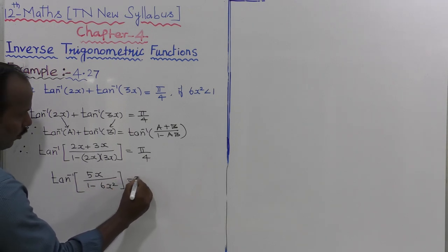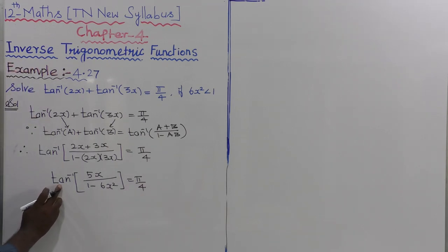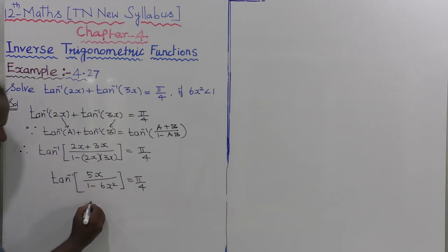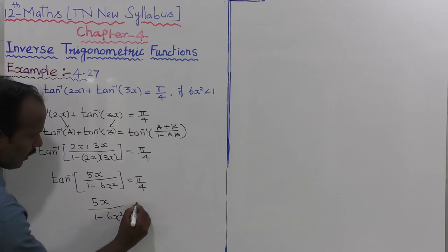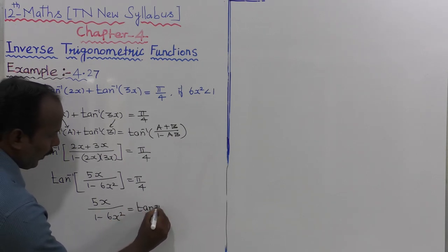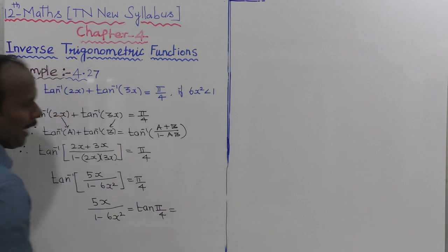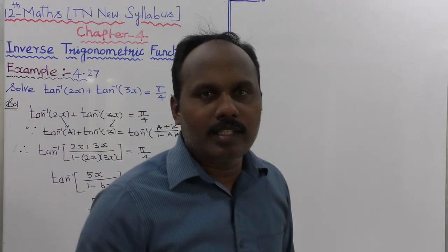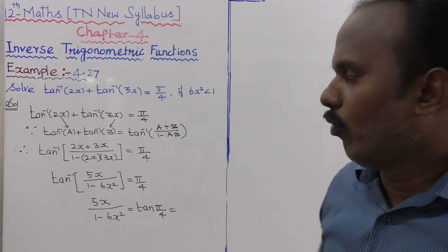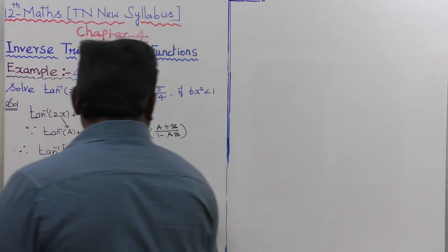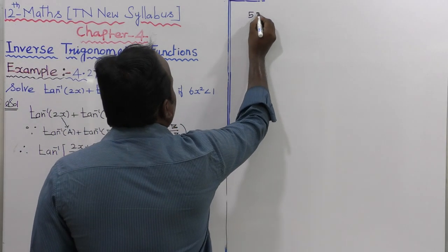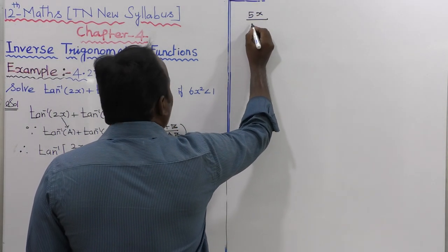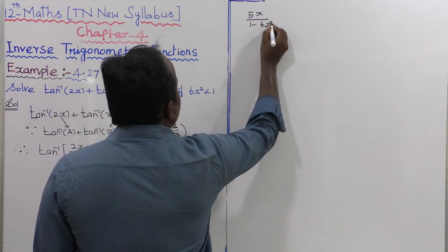So tan inverse of 5x divided by (1 minus 6x squared) equals pi by 4. Moving tan inverse to the right side: 5x divided by (1 minus 6x squared) equals tan(pi by 4). Since tan 45 degrees equals 1, this equals 1.